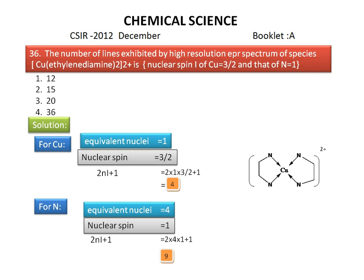Now we multiply these two values: 9 into 4. We get the total number of lines in the EPR spectrum of copper 2 plus complex, that is 36. 36 lines of EPR spectrum will be obtained for the diethylenediamine copper 2 plus complex. So the correct answer is 36. The fourth option is correct. Thank you.